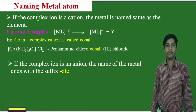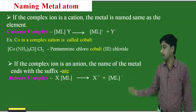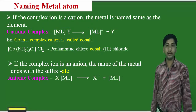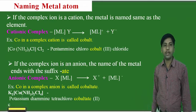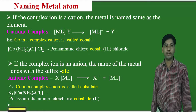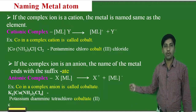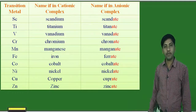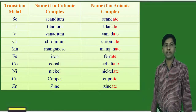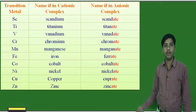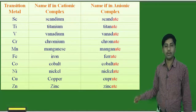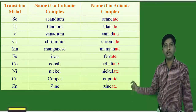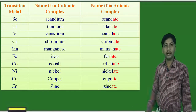If the complex is anionic, we must add the suffix '-ate' to the metal name. For example, K2[Co(NH3)2Cl4] is named potassium diaminetetrachlorocobaltate. The metal names change as follows when the complex is anionic: scandium → scandate, titanium → titanate, vanadium → vanadate, chromium → chromate, manganese → manganate, iron → ferrate, cobalt → cobaltate, nickel → nickelate, copper → cuprate, zinc → zincate.